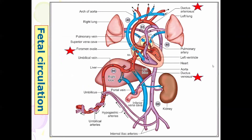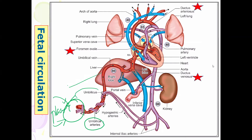Here is the placenta, where all nutrients get exchanged — glucose, amino acids, oxygen — all of these are taken by the fetus from the placenta. Remember, the umbilical arteries carry impure blood to the placenta, and the umbilical vein carries oxygenated blood. Unlike in the adult — where veins carry impure blood and arteries carry pure blood — in the umbilical vessels, the umbilical vein carries pure blood and the umbilical artery carries impure blood. The blood is then taken to the heart.